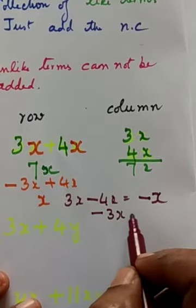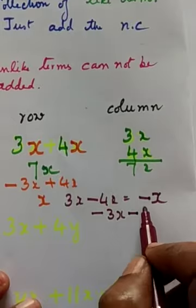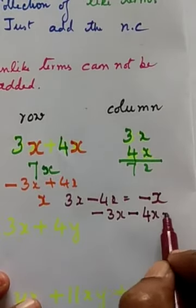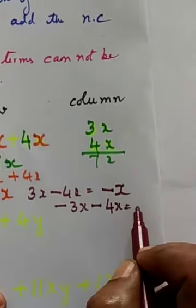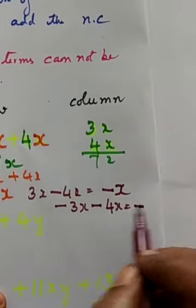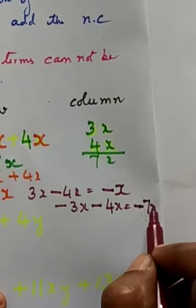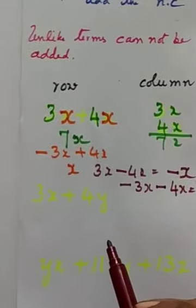What happens if we add minus 3x minus 4x? You have to put minus sign here. Both are minus. Minus 7x. Okay.